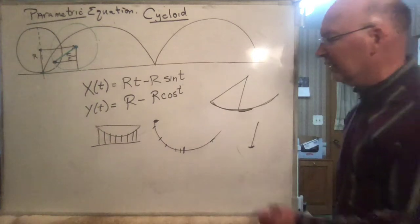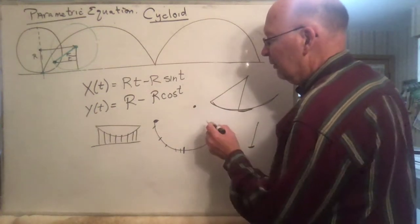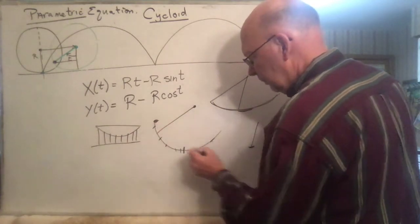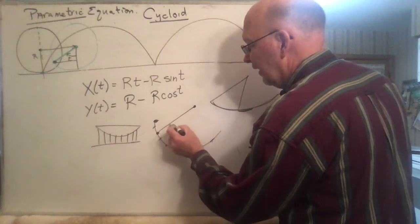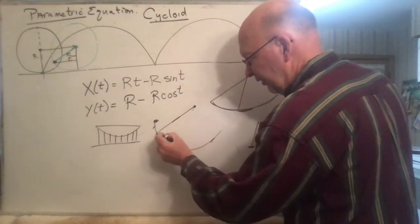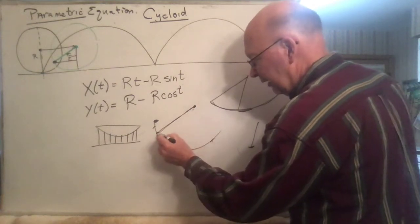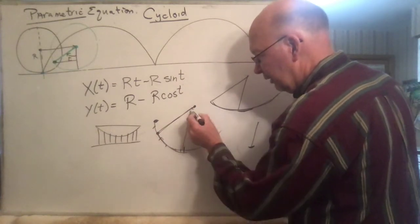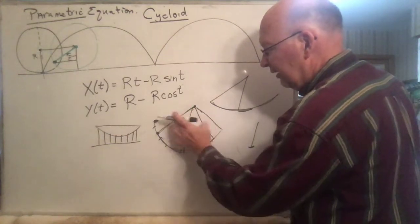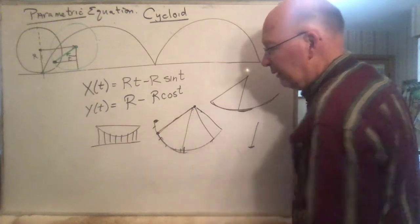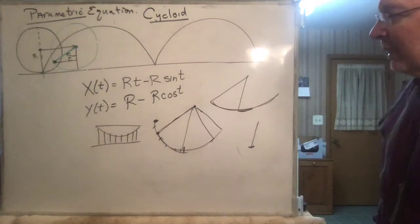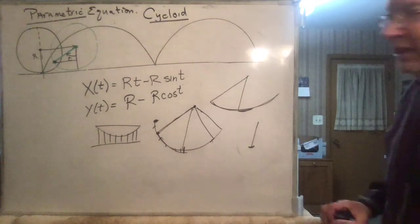I think it was Huygens who built a clock with a cycloid shape, where the pendulum was on a little spring. As it moved, the effective length could change, and it rolls right along the cycloid. So it doesn't matter how high you start it — the period is always the same. Lots of interesting math there.